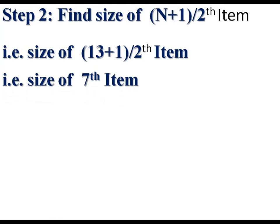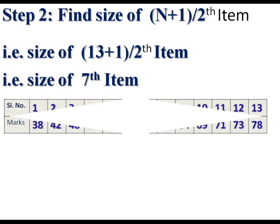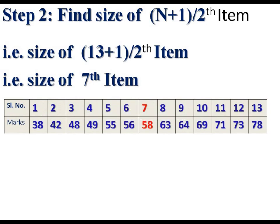The 7th item is the median. When arranged in ascending order, the 7th item is 58. Therefore, median is equal to 58.